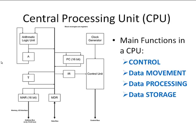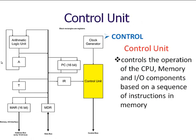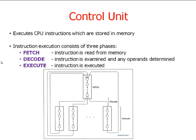The whole heart of the system is the control unit. It controls the operation of the CPU, memory, and I/O components based on a sequence of instructions in memory. Where do those instructions come from? It's your program. Your program controls what happens within the control unit of the CPU. The control unit executes CPU instructions, which are stored in memory — in other words, your program.